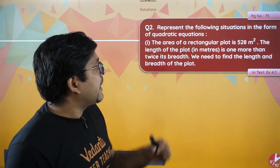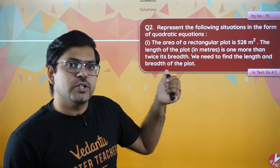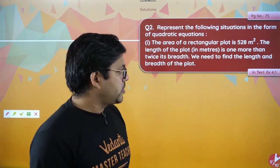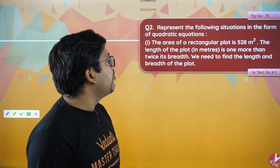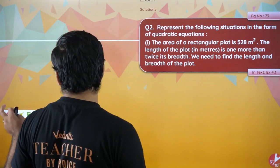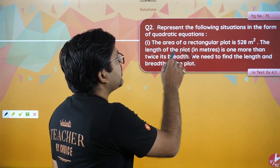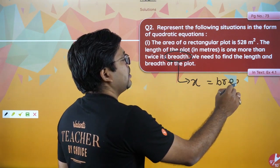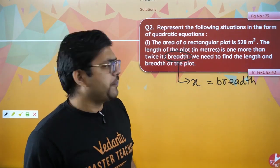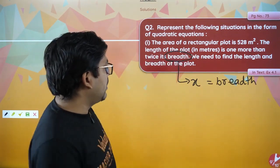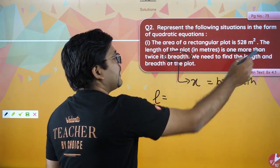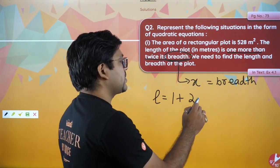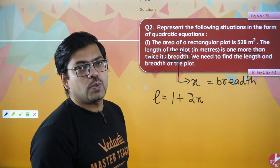The question asks us to represent the following situation in the form of a quadratic equation. The area of a rectangular plot is 528 square metres. The length of the plot in metres is one more than twice its breadth. So if we let the breadth be x, then the length is 2x plus 1.